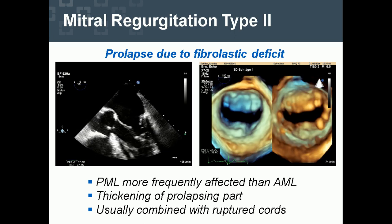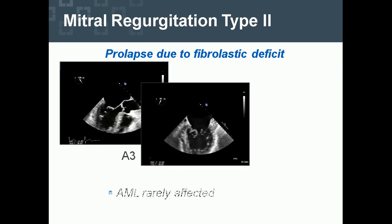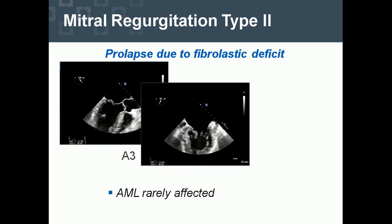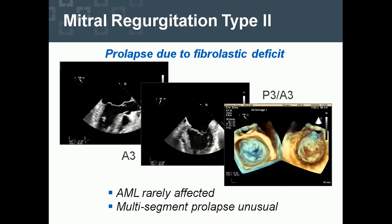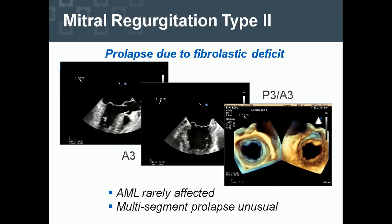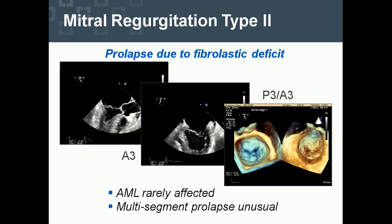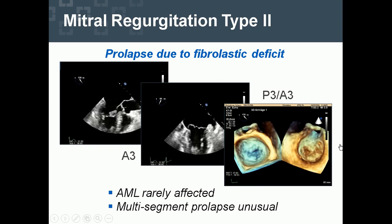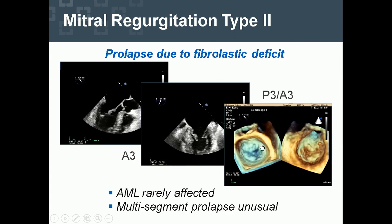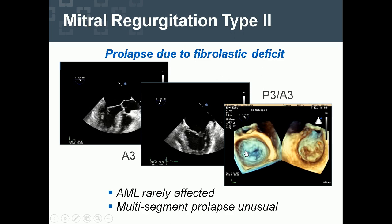Usually this is combined with ruptured cords. On 2D, the anterior mitral leaflet is rarely affected but can be, as seen here with an A3 prolapse. Sometimes it is also a multi-segmental prolapse, although this is not typical. Single-segment prolapse is typical for fibroelastic deficit, but sometimes two segments are involved — for example, A3 and P3.